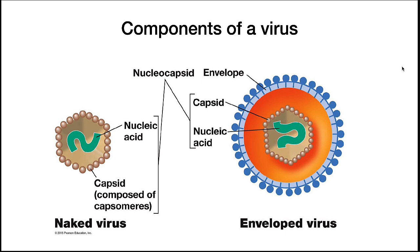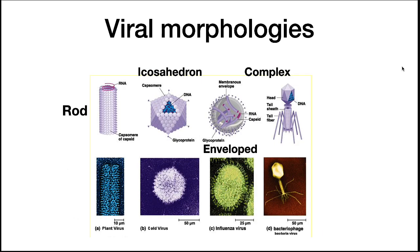Some viruses are surrounded by an envelope, which is a protein-containing membrane that goes around the virus. Viral morphologies can be symmetrical or complex. There are rod-shaped viruses, such as the tobacco mosaic virus; icosahedral viruses, meaning they're 20-sided, such as the cold virus; and envelope viruses, such as SARS-CoV-2 and the influenza virus.